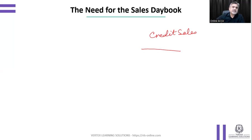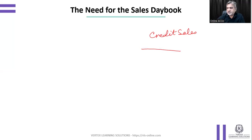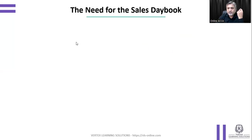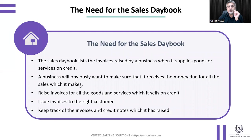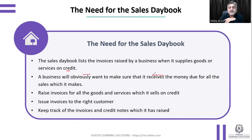Cash sales are done, but credit transactions are not completed — I've given the goods but the customer hasn't given the cash, so I still need to follow up. That is the main reason for putting credit sales separately, so they don't get mixed up with cash sales. The sales daybook lists the invoices raised by a business when it supplies goods or services on credit, so the business can ensure it receives the money due.